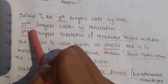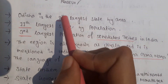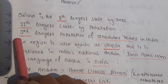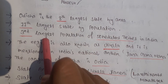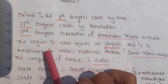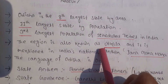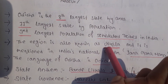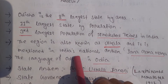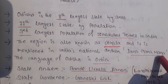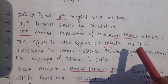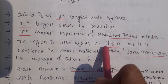You should remember these numbers: 8th largest by area, 11th largest by population, and 3rd largest by SC/ST caste people. Odisha is also known as 'Uttkala,' which is mentioned in India's national anthem Jana Gana Mana.